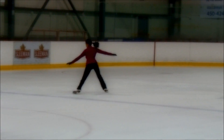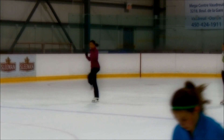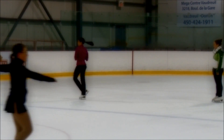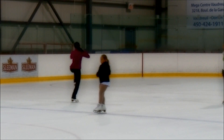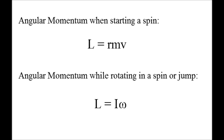Now that you know how a spin starts, you might wonder what happens in a spin. The answer to that is quite simple — it's really the same as when you rotate in a jump. So that means that you can increase the speed of the spin because of the moment of inertia and the conservation of angular momentum. Just to clarify, the equation for angular momentum when starting a spin is L equals RMV, and the equation for when you're rotating in a spin or jump is L equals I omega.